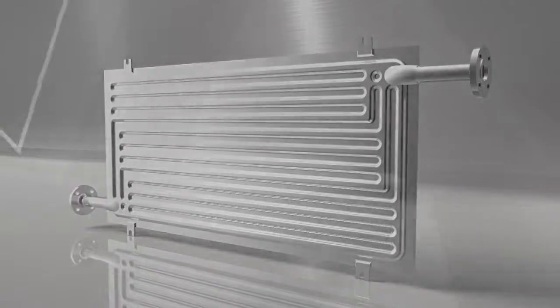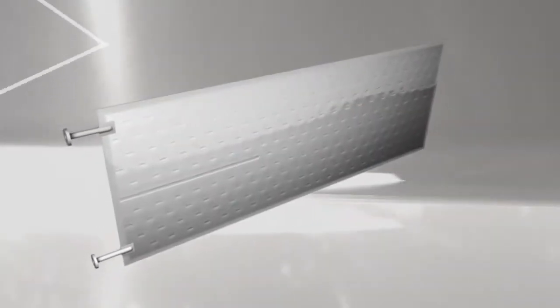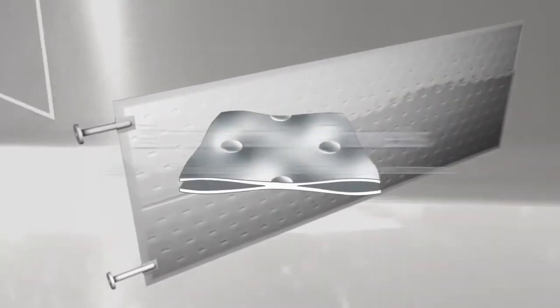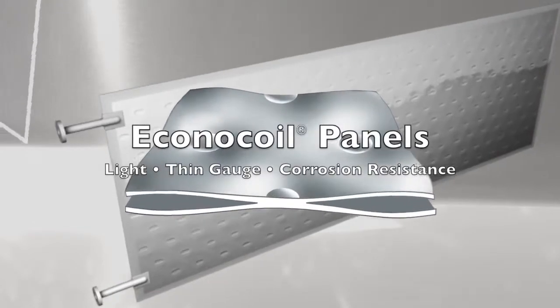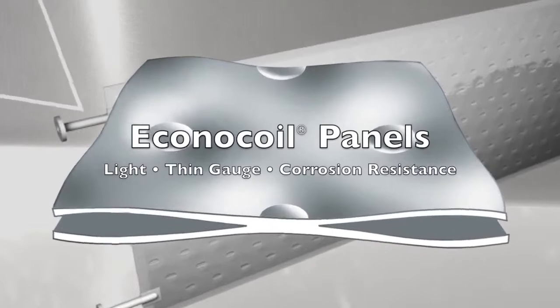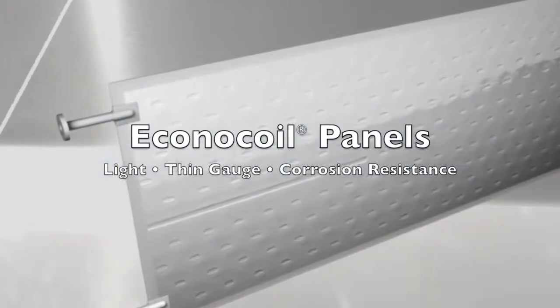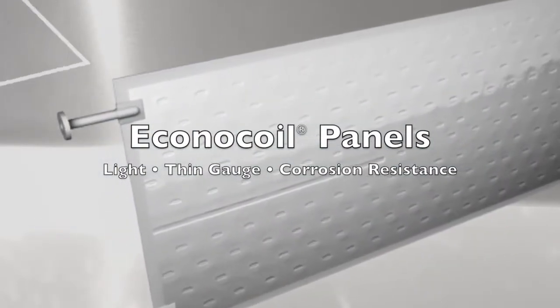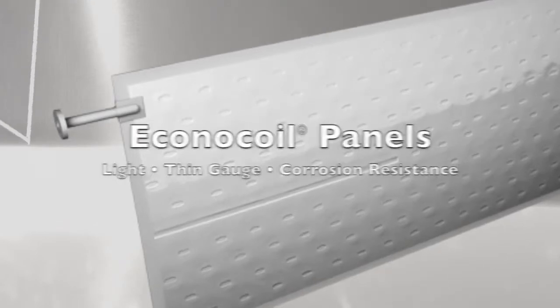A special Plate Coil variant, EconoCoil Hydraulically Expanded Panels, are available in an assortment of single embossed or double embossed styles and sizes and serpentine or parallel passes. In corrosive service, these thin gauge panels can be fabricated economically from titanium alloys for long service life.